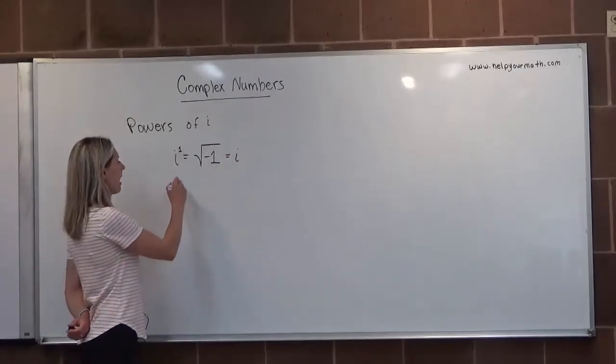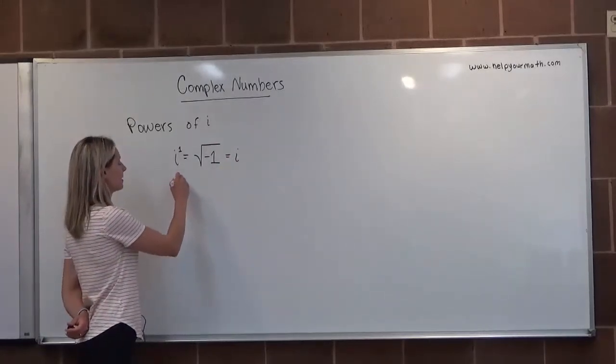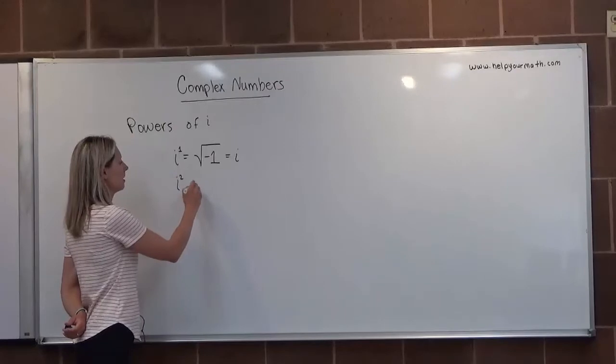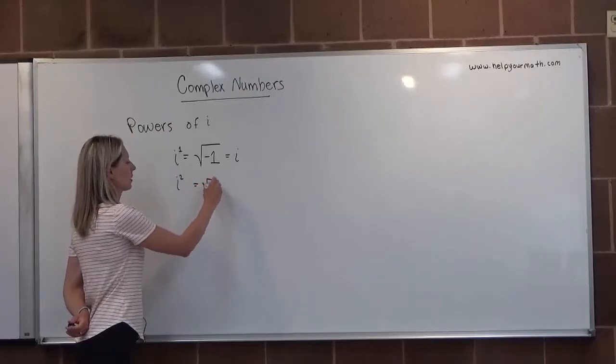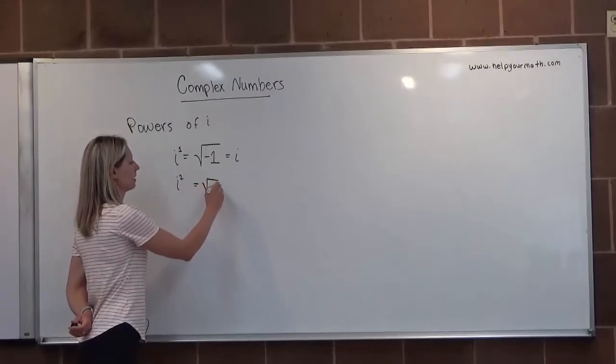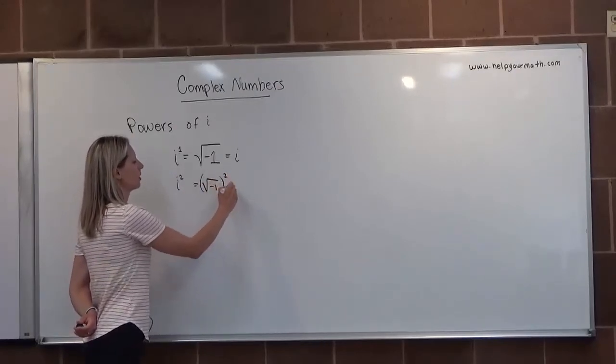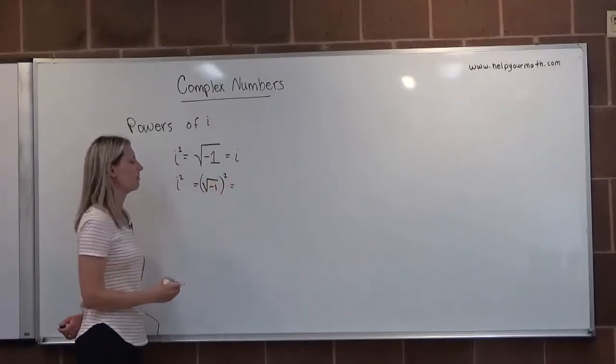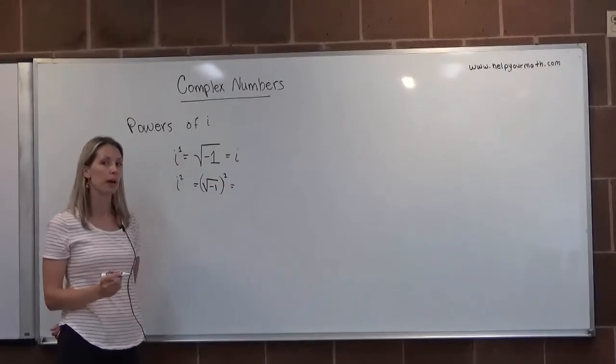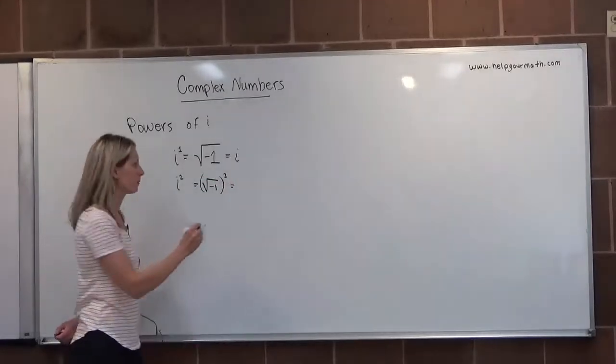The next power of i would be i squared, so that would be the square root of negative 1 squared, and the square root of negative 1 squared would be negative 1.